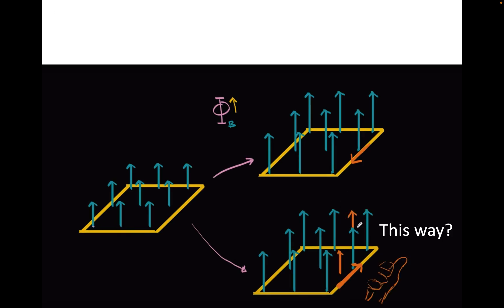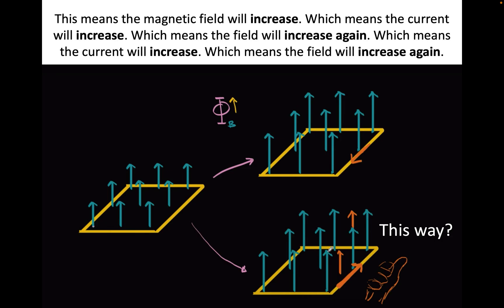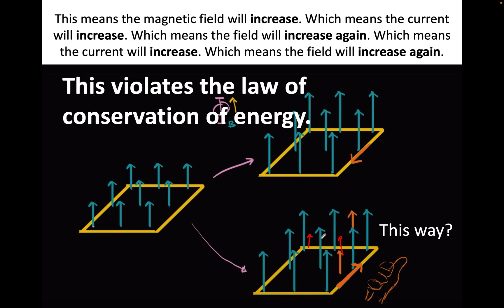If we pick the upward direction, that means we have another field going up, which adds to the existing field. But then that's increasing the flux again, which means the current will increase. If the current increases, there will be more lines pointing up; if there are more lines pointing up, the flux is increasing — so the current will increase and continue and continue, which is wrong. This would violate the law of conservation of energy.